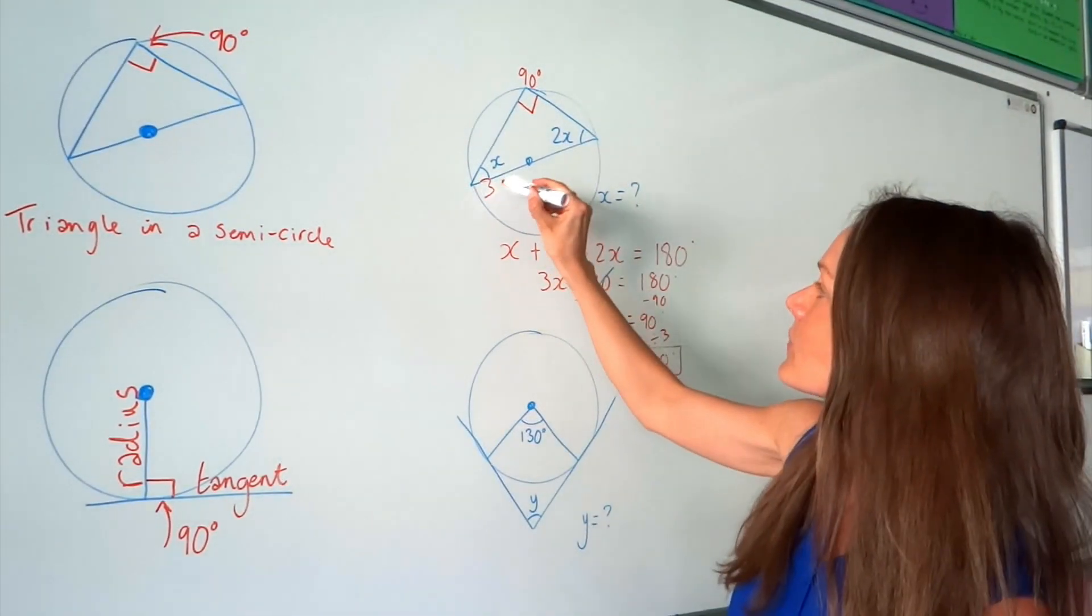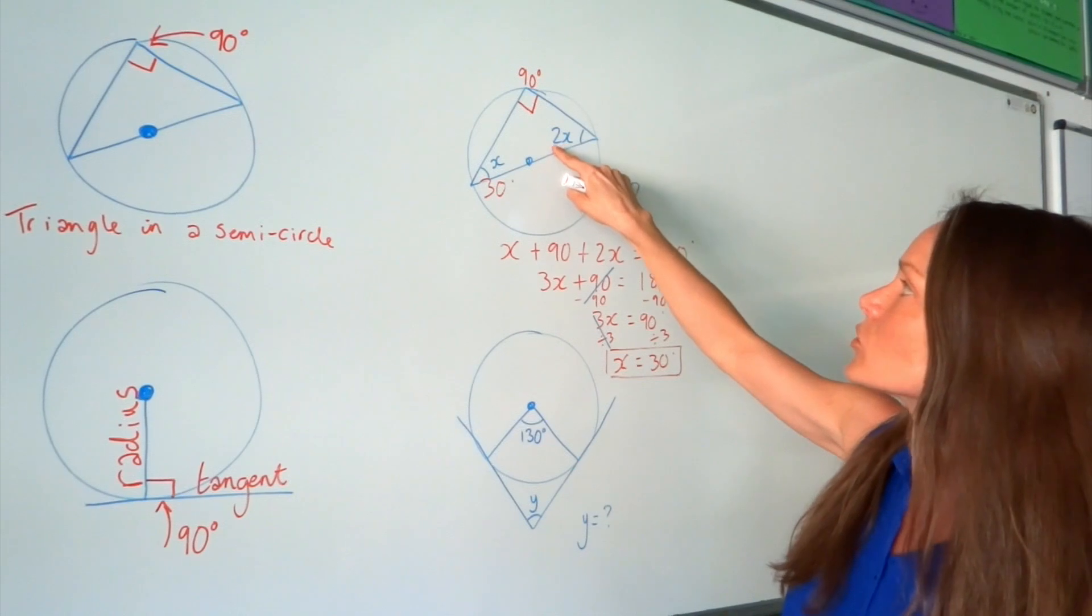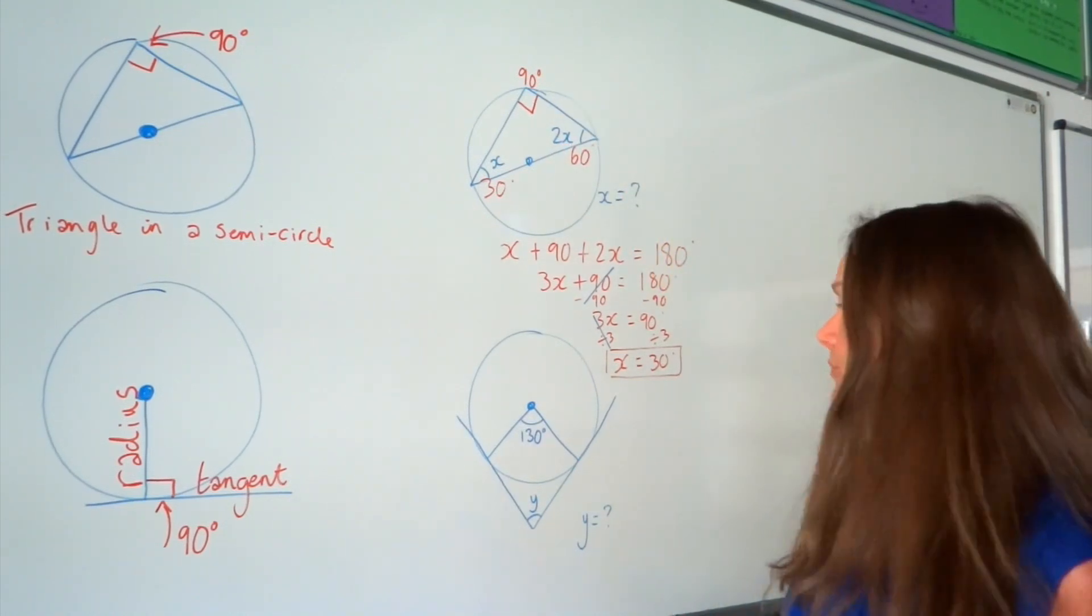So, this one up here is 30. And if they ask you to work out what this angle is as well, well, it's just 2 lots of X. So, 2 lots of 30, which is 60 degrees.